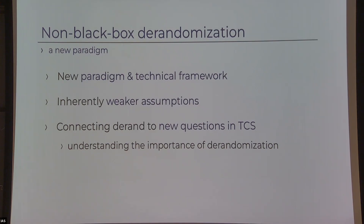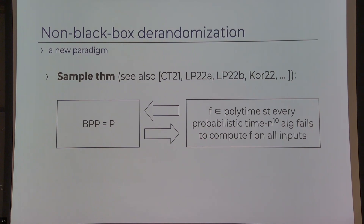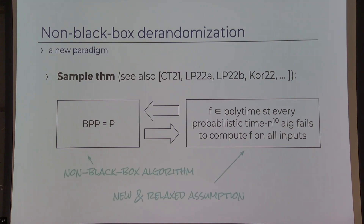Along with co-author Ligio Chen, we've been able to introduce a new paradigm and technical framework to get this type of result in various settings. One result is a two-way connection between the statement BPP equals P — regardless of PRGs — and a relaxed hardness assumption that doesn't talk about circuit lower bounds, but only about lower bounds for probabilistic Turing machines. This is the right thing to expect when talking about de-randomization, and it apparently characterizes de-randomization.